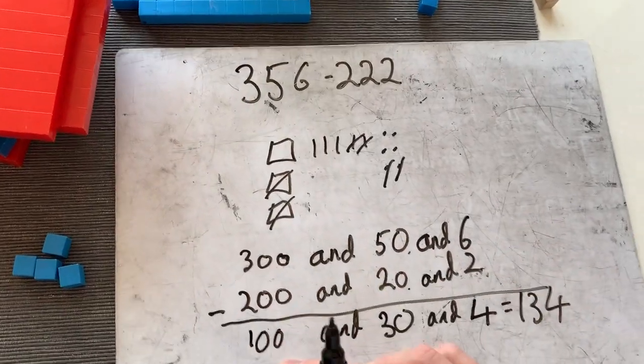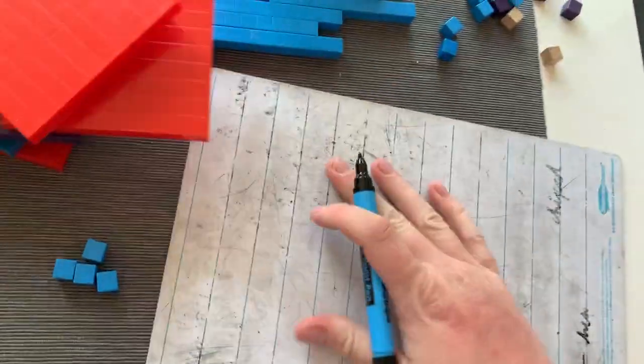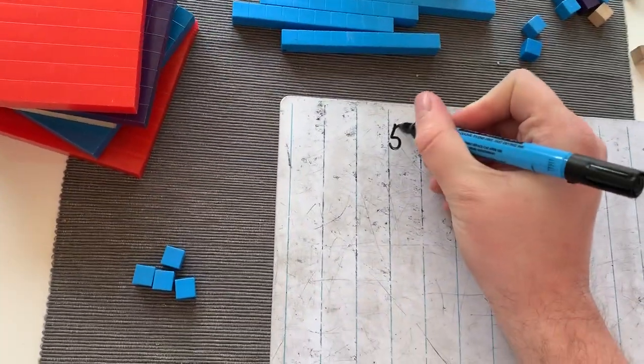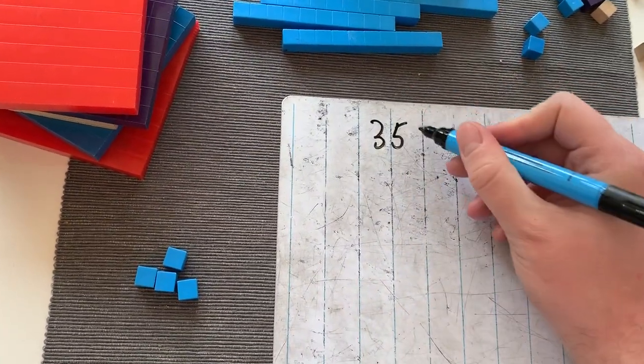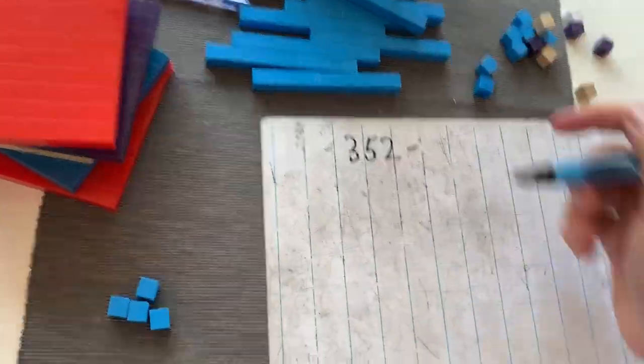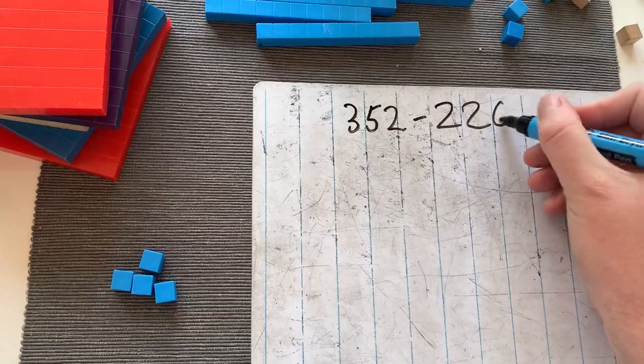And you may ask, what happens if we have to exchange? That's a very, very exciting time indeed. So we'll keep it very similar, but we'll just change the numbers around. So it's 352 minus, what was it again? 226.